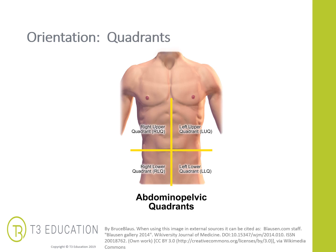We often talk about quadrants when working in the abdominal area. We have the right upper quadrant — for example, you might find the liver here — the left upper quadrant, the left lower quadrant and the right lower quadrant. You may have clients who have had various surgeries, and when reading medical reports it is good to understand these terms and where you might find scarring. For example, a client may tell you they've had a hernia in the right lower quadrant, and understanding where that is helps you assess how that surgical repair might impact your client's movement.